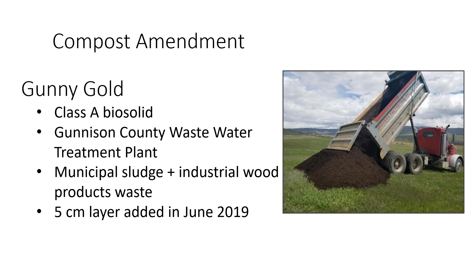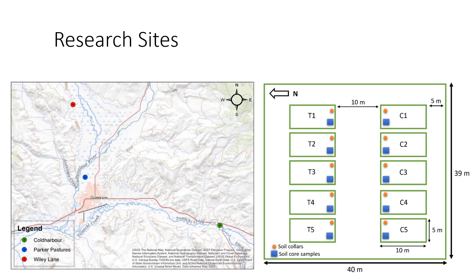To carry out these objectives, I collected data on compost amended rangeland plots. The kind of compost that was used was Gunny Gold, a Class A biosolid produced by the Gunnison County Wastewater Treatment Plant, comprised of municipal sludge and industrial wood products waste. One year prior to data collection, compost was applied at three rangeland sites, with each site having five treatment and five control plots.